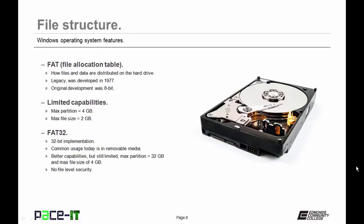FAT32 came along and was a vast improvement — a 32-bit implementation. Its common usage today is in removable media like USB flash drives and camera memory cards. It had much better capabilities but is still limited: max partition is 32 gigabytes, max file size is 4 gigabytes, and it offers no file-level security.